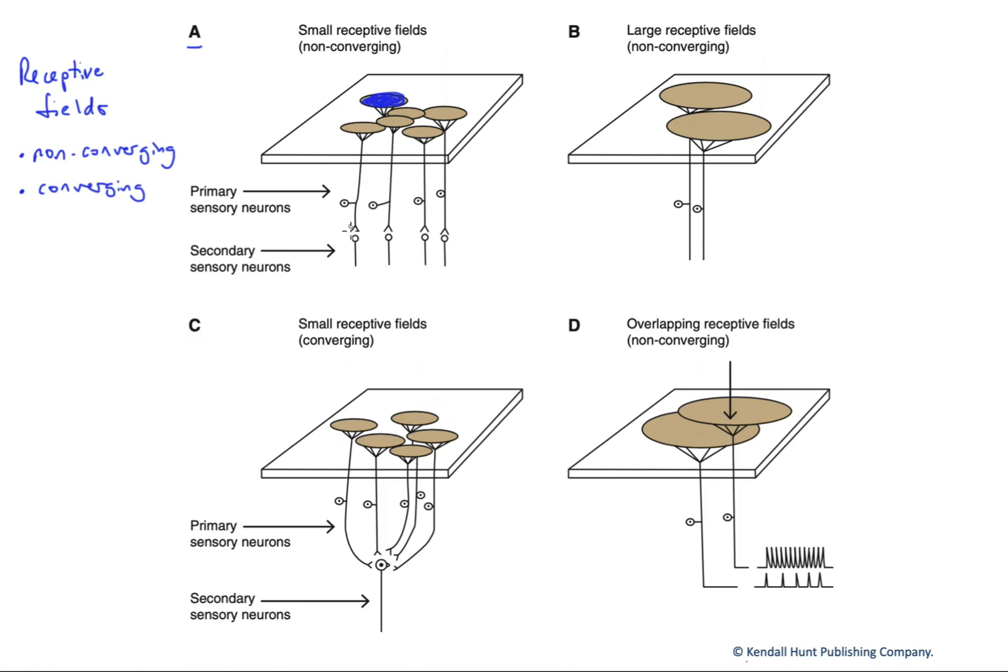Each innervates its own secondary neuron. That means that we have very good point discrimination. A stimulus that arrives onto this sensory neuron's receptive field versus one that hits this receptive field will be processed as distinct information by the central nervous system. We get very good point discrimination, meaning we can tell the two apart on the surface of our skin.